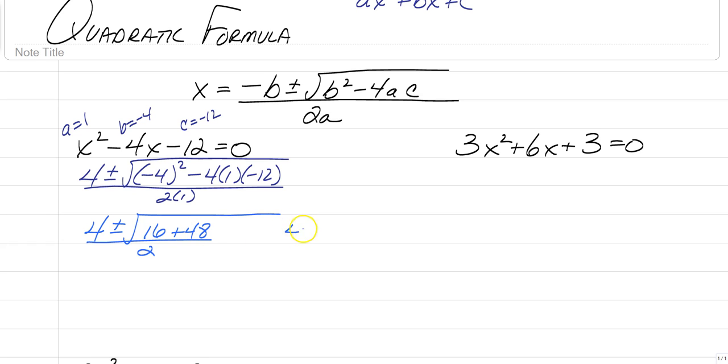So now you just have to pretty much get working. So we're going to have 4 plus or minus the square root of 16, and then we have negative 4 times 1 times negative 12, which is positive 48, all over 2. 16 plus 48 is actually 64. So 4 plus or minus the square root of 64 all over 2. And I want you to take special note of this positive number on the inside. Square root of 64 is 8, so we have 4 plus or minus 8 all over 2.